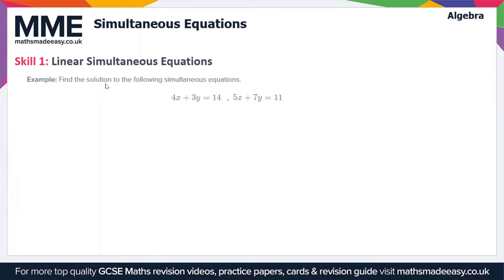Here we have to find the solution to the following simultaneous equations. We've got 4x plus 3y equals 14, that's our first one. And then we've got 5x plus 7y equals 11, so that's our second one.